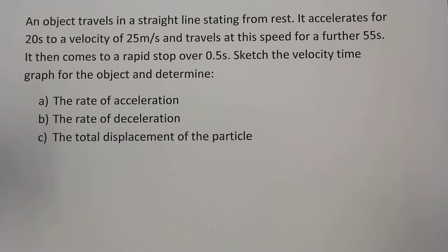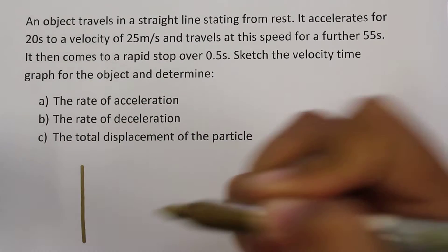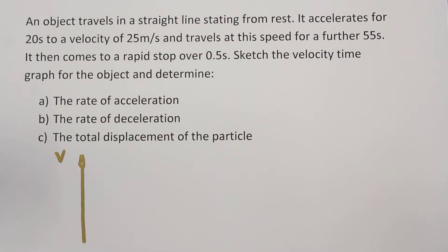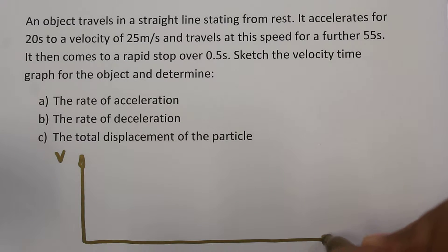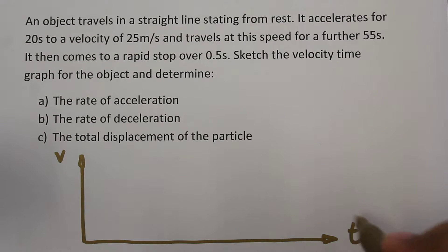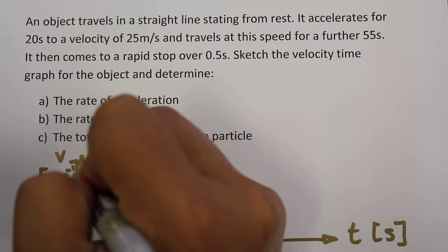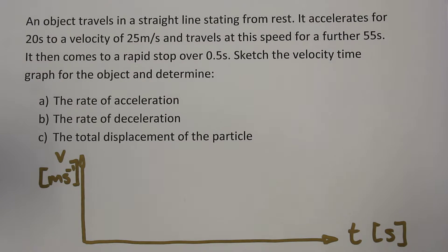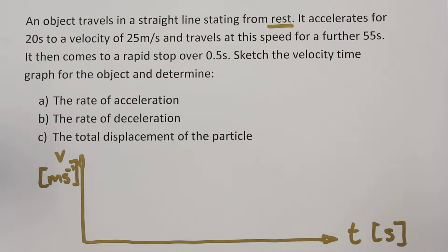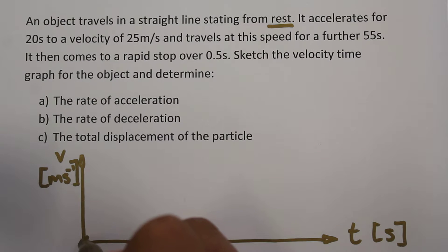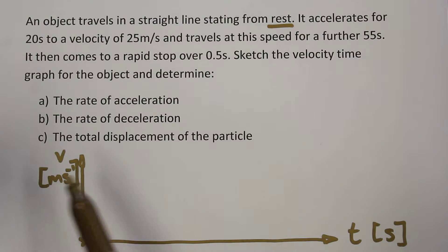I will start this question by drawing a velocity versus time graph. Here I'll draw the velocity on one axis and time on the other. Time is being measured in seconds and velocity is being measured in meters per second. So it starts from rest — our initial position is at a velocity of zero when time is zero.